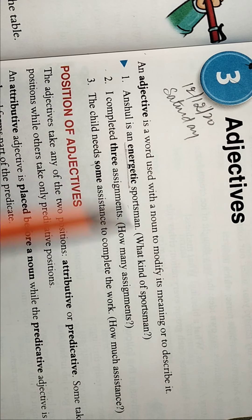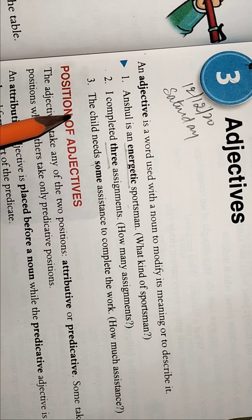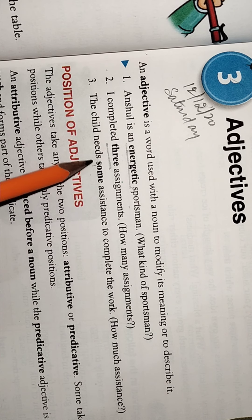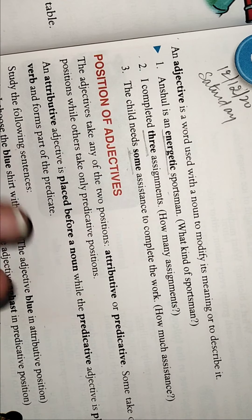Describing the energetic. I completed three assignments - how many? So here it is telling the number. Child needs some assistance - how much assistance? So here it is telling the quantity. Like this we have variety of kinds of adjectives.